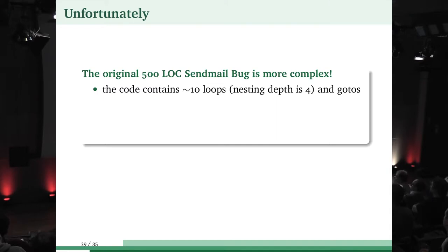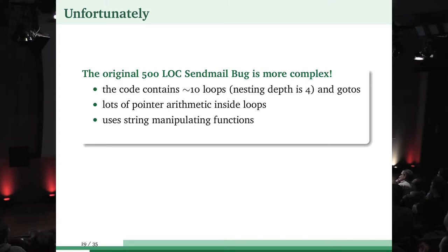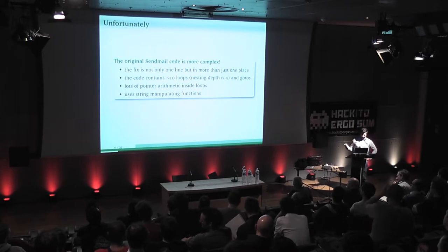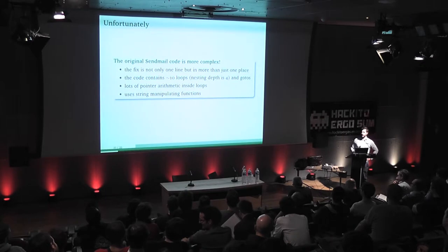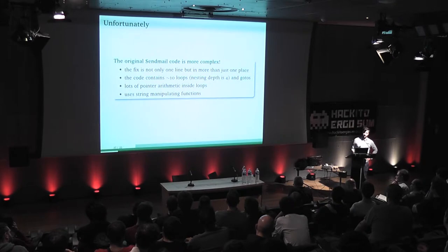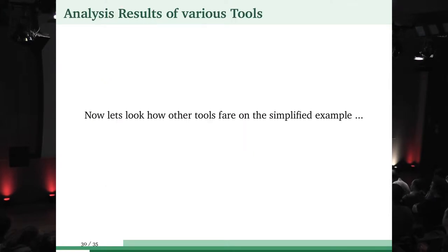So far so good for the 50-line example. Unfortunately, going from the 50-line example to the 500-line original Sendmail code, we cannot show it's safe anymore. The code is more complex, with more control flow, string functions reading from memory, and translating strings. Our abstractions become imprecise and we can no longer show that the bounds hold. We could show the fix works in the simplified example, but not in the real-world bug.